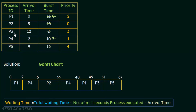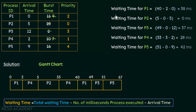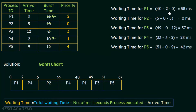For P1, look at the Gantt chart and find where P1 occurred last — it got the CPU at the 40th millisecond, so the total waiting time is 40. Before that, P1 executed for 2 milliseconds. P1's arrival time is 0. So waiting time for P1 = 40 − 2 − 0 = 38 milliseconds.